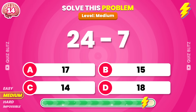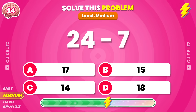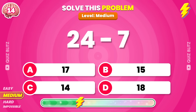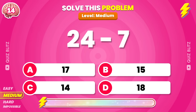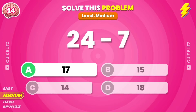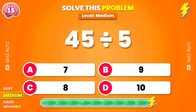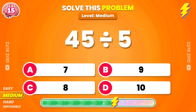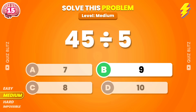What's the result of 24 minus 7? The answer is 17. How much is 45 divided by 5? The result is 9!